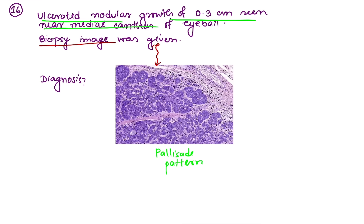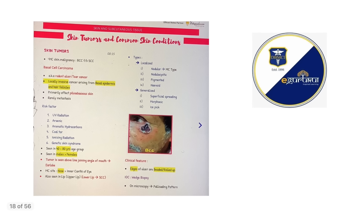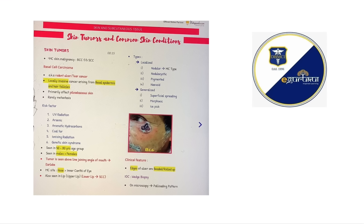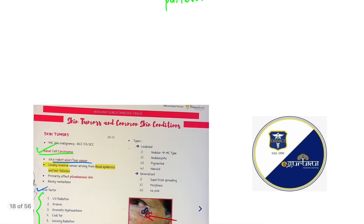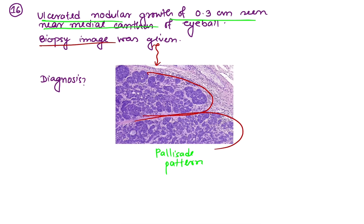This is basal cell carcinoma, also known as rodent ulcer. Risk factors include UV radiation, arsenic, coal tar, etc. Clinical features: edges of the ulcer are beaded and rolled up. On microscopy it shows a palisading pattern — the typical palisading pattern seen in basal cell carcinoma. So the answer is basal cell carcinoma.